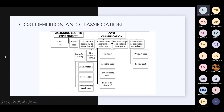Cost definition and classification — this is in your module. Most of the content I cover comes from your module; I just highlight things that are important for this class. Costs are assigned to a cost object. When you assign those costs, you need to know which one is a direct cost and which one is an indirect cost. After defining whether it's direct or indirect, you classify that cost according to its nature, its behavior, sometimes time frame, and whether it's a product or period cost.